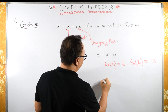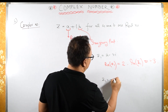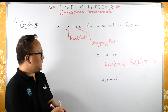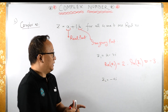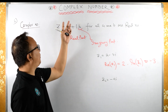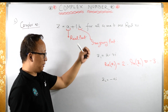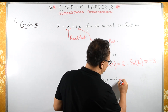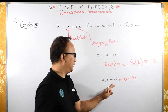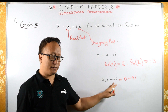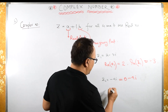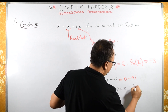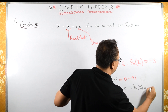What if we have Z2 equals minus 4i only? Then what is the real part and what is the imaginary part? Remember, a complex number is of the form A plus iB. Here this can be written as 0 minus 4i, since 0 minus 4i is the same as minus 4i. Therefore, the real part of Z2 is 0 and the imaginary part of Z2 is minus 4.